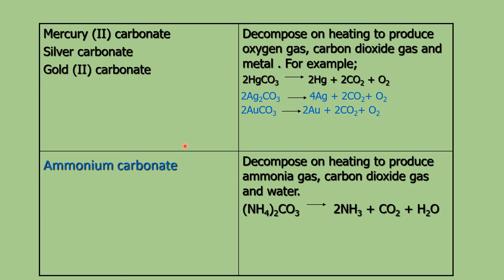Ammonium carbonate is separated from the other boxes because its products are different. The earlier salts produced metal oxide and carbon dioxide, or metal plus carbon dioxide and oxygen. But ammonium carbonate decomposes on heating to produce ammonia gas, carbon dioxide gas, and water. That ammonia gas is an alkaline gas.